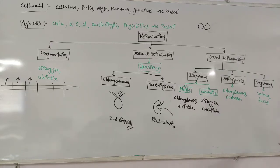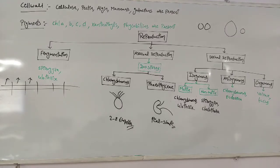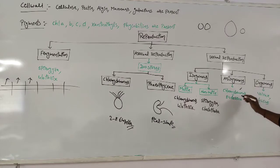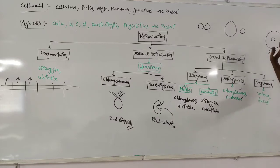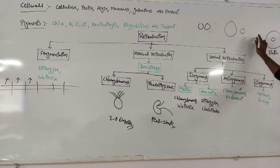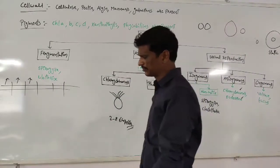Anisogamy means one is large size and the other is small size — the gametes are unequal. Examples are Cladophora monas and Volvarina. The last one is oogamy: female gametes are always having large size and are in static position — non-motile — fixed to one position. The male gametes may be motile or non-motile. Examples are Volvox and Fucus.